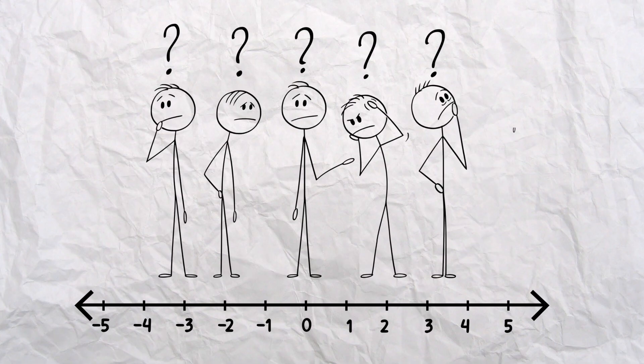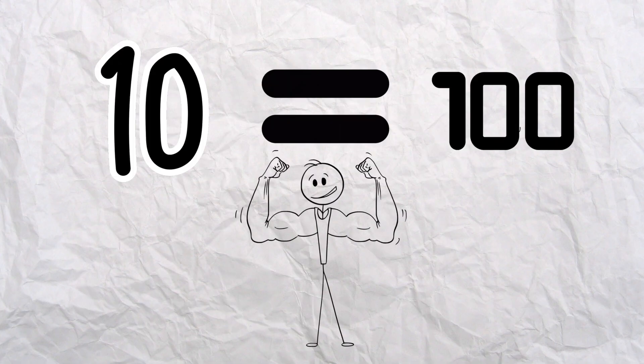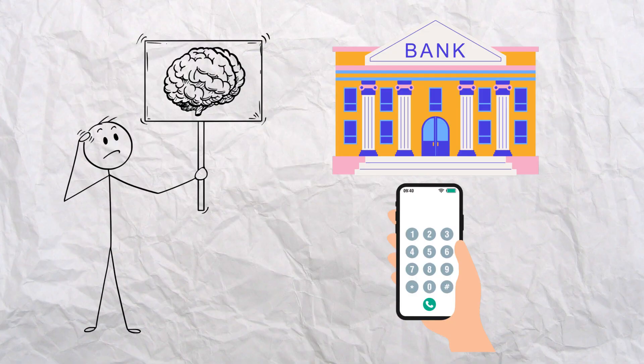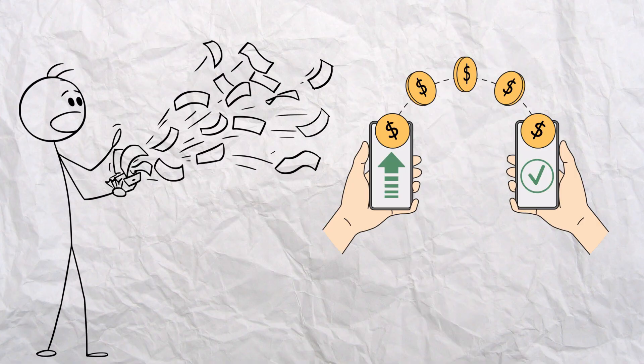Zero is not just a number. It's a placeholder. The space that tells us where other numbers belong. Without it, 10 and 100 would look the same. Imagine writing your phone number or bank balance with no zeros. You'd probably send your rent money to the wrong person every time.